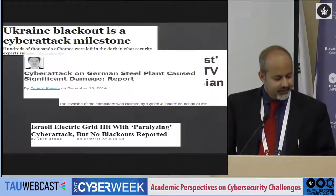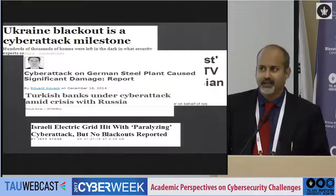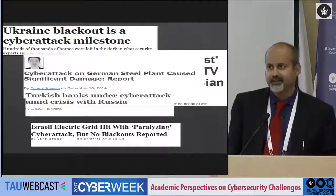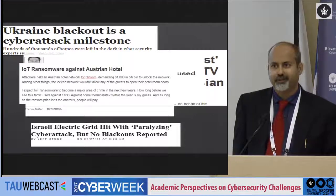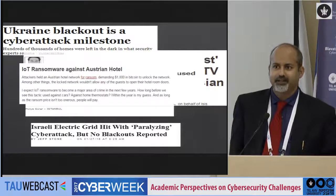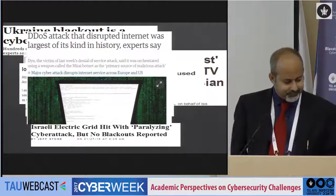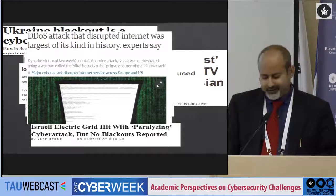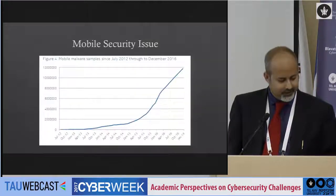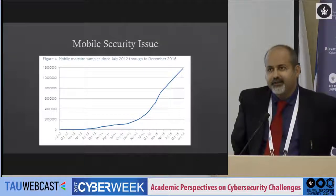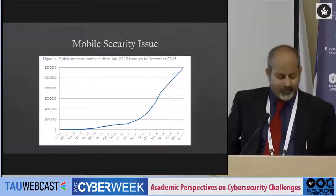Television networks get hacked. A German steel plant in December 2014 got hacked and equipment was damaged. Turkish banks were under a massive DDoS attack last year, which can have a big impact on the economy. An Austrian hotel got hacked by IoT ransomware — people got locked out of their rooms and had to pay ransom to let guests in or out. Then we had the Dyn attack in October — the IoT-based DDoS attack — which is quite scary. Since we are all so dependent on mobile devices nowadays, we are seeing an exponential rise month to month in mobile malware.